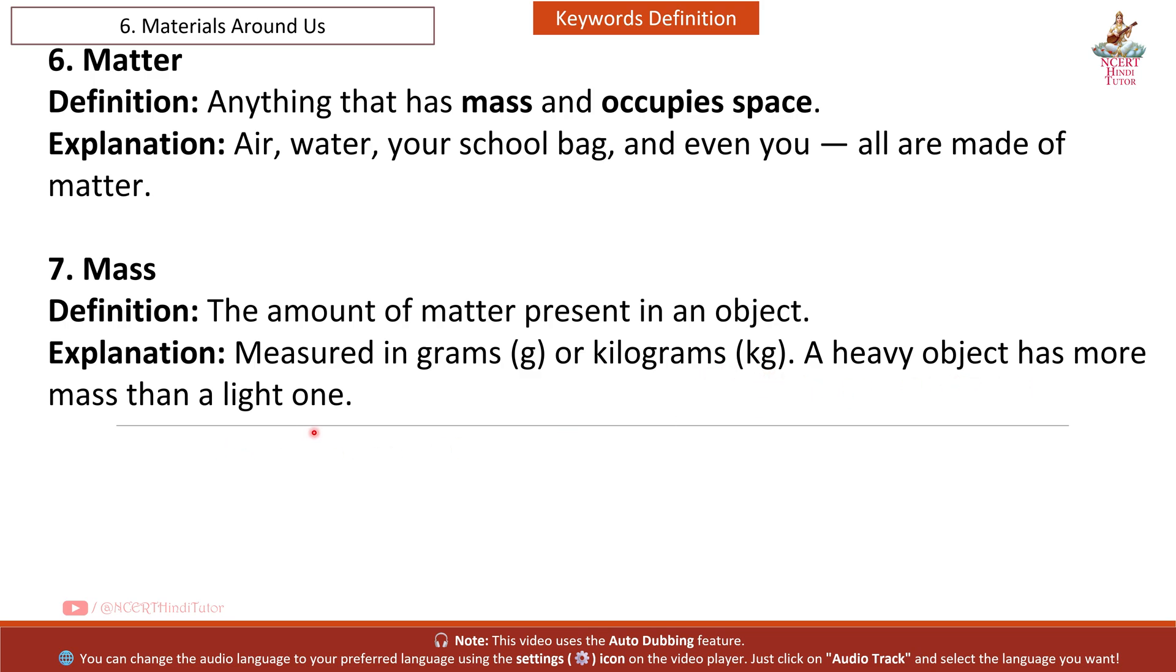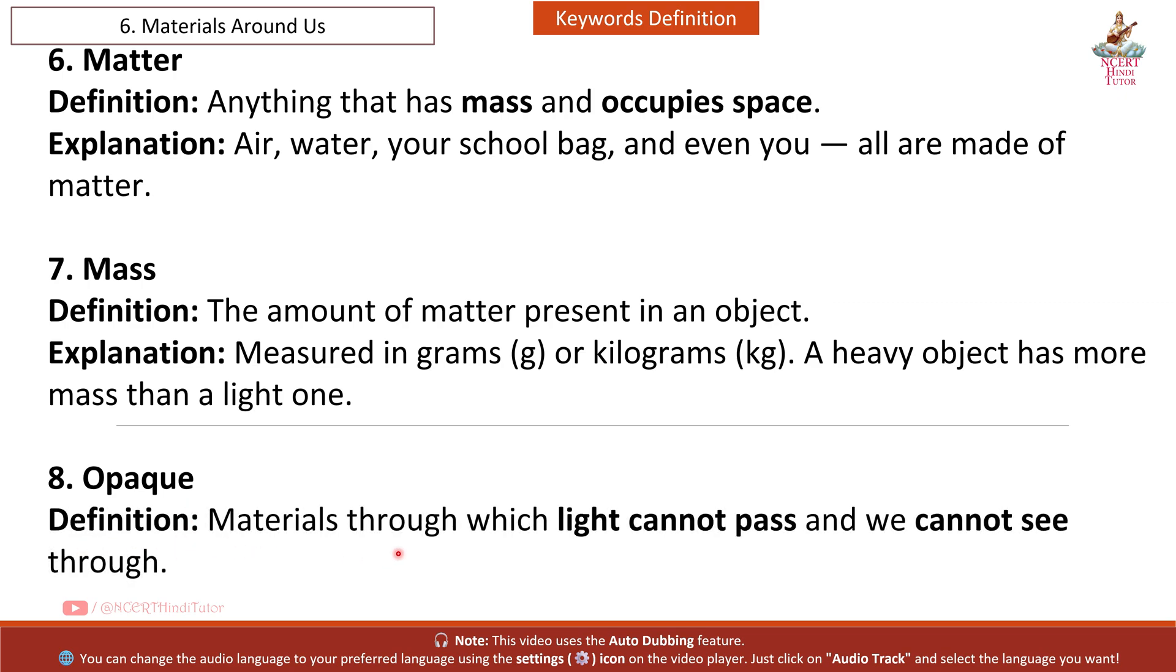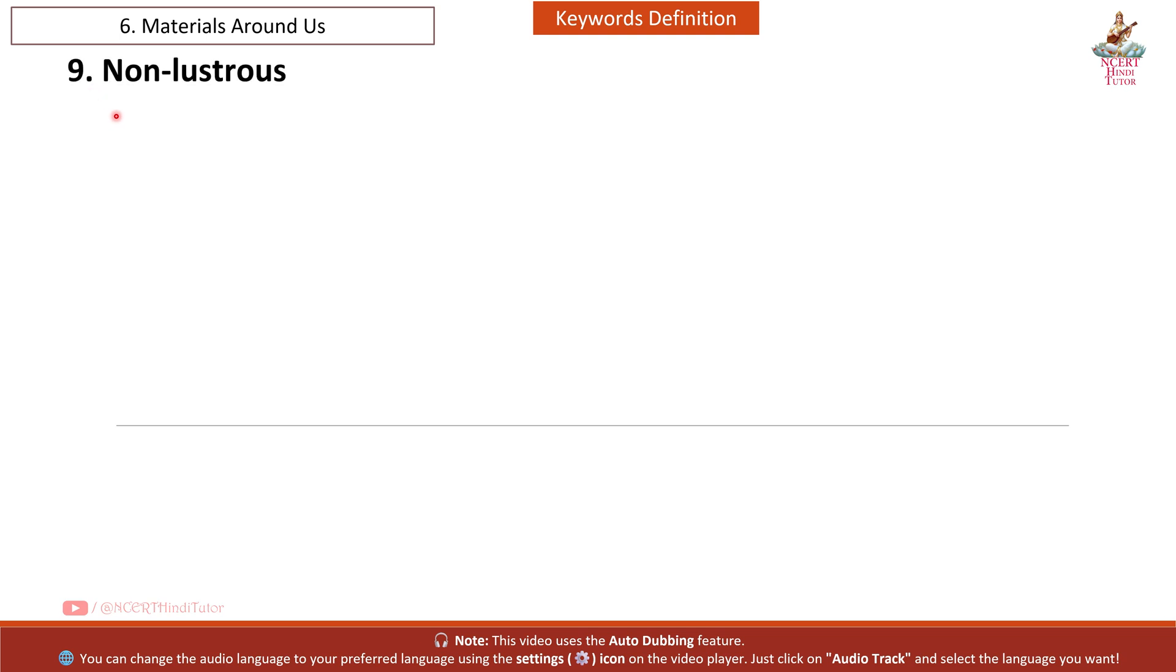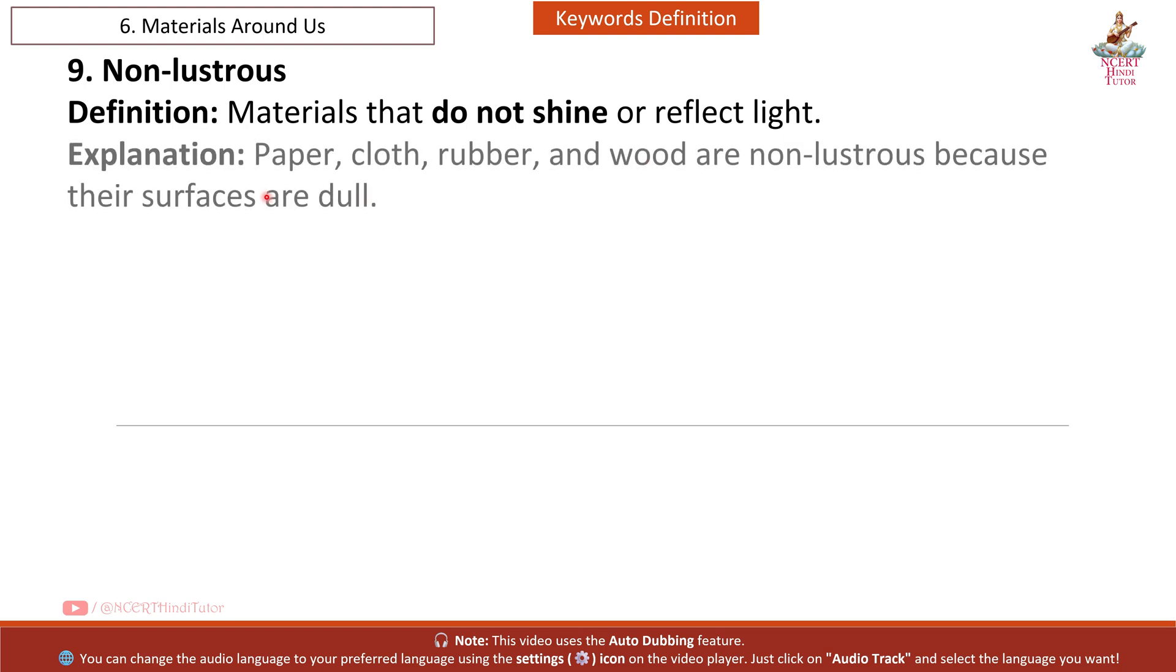Seventh: Mass. Definition: the amount of matter present in an object. Explanation: measured in grams or kilograms. A heavy object has more mass than a light one. Eighth: Opaque. Definition: materials through which light cannot pass and we cannot see through. Explanation: wood, metal and cardboard are opaque materials. Nine: Non-lustrous. Definition: materials that do not shine or reflect light. Explanation: paper, cloth, rubber and wood are non-lustrous because their surfaces are dull.